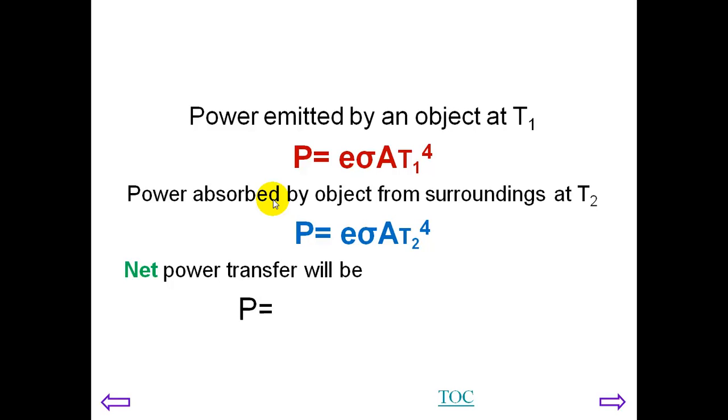The net power transfer will be the difference between these two. We can simplify these by factorizing. Take out a factor of E, sigma, A, and it's basically the difference between the fourth power of the temperatures.